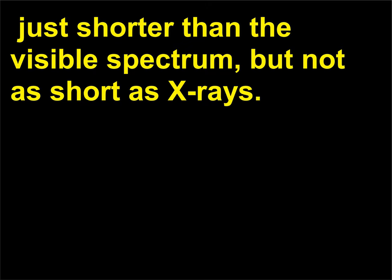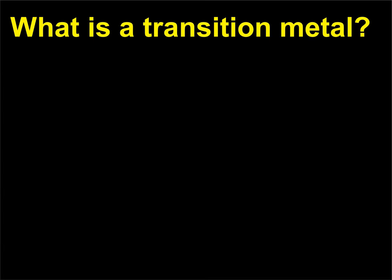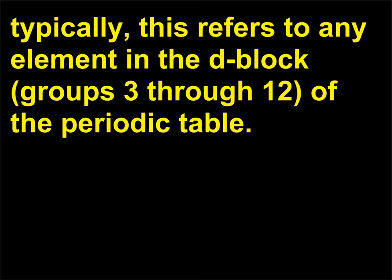What is a transition metal? Typically, this refers to any element in the D-block, groups 3 through 12, of the periodic table.